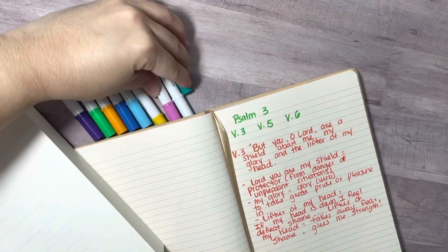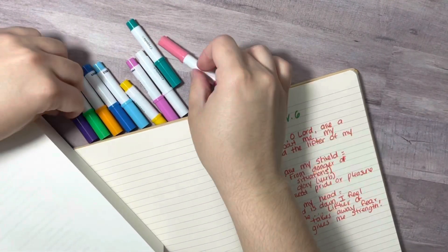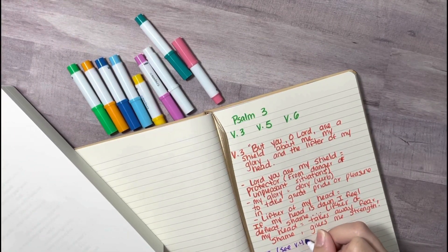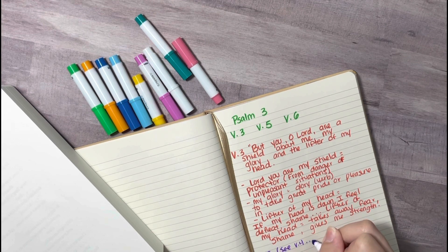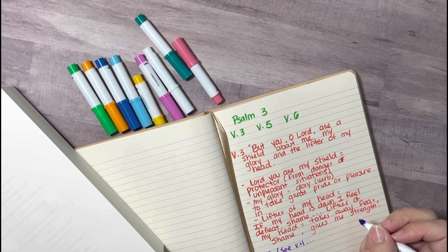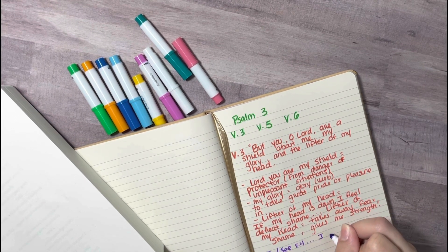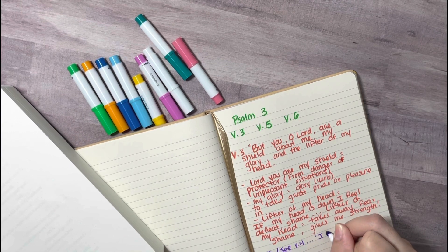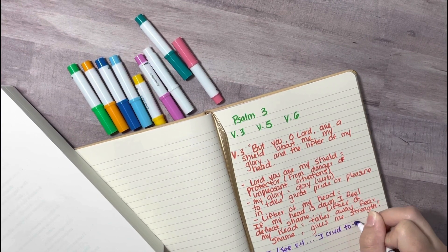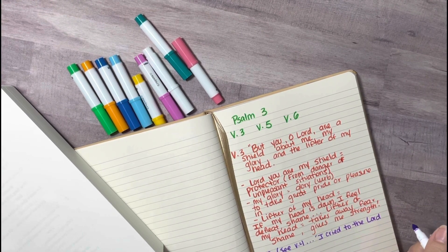And I'm just going to switch to another color. I like doing this just for fun because I like separating the verses in different colors. So I know which one is which, separate them and break them down. So the next one that we are going to consider is verse five, because this is the one that really stood out to me. And it says, I lay down and slept. I woke again for the Lord sustained me.